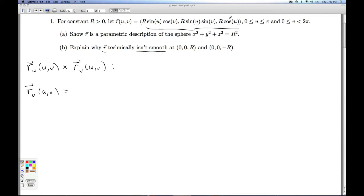That means I need to take the derivative of each component with respect to u. So I'm going to have r cosine u cosine v, r cosine u sine v, and minus r sine u.